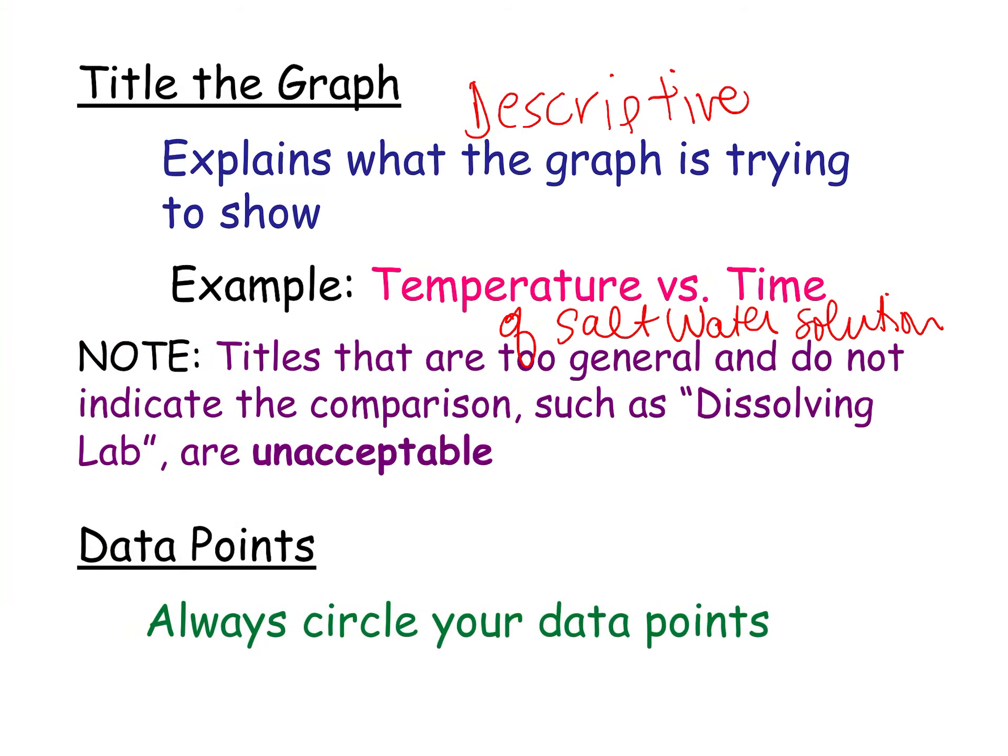Data points should always be circled. So if you've got a graph, and you're doing something like this, and we circle our data points, it shows intent. So let's say you try to erase, and it doesn't really work out. It doesn't matter. So you circle your data points. Always. Yeah, that circle.